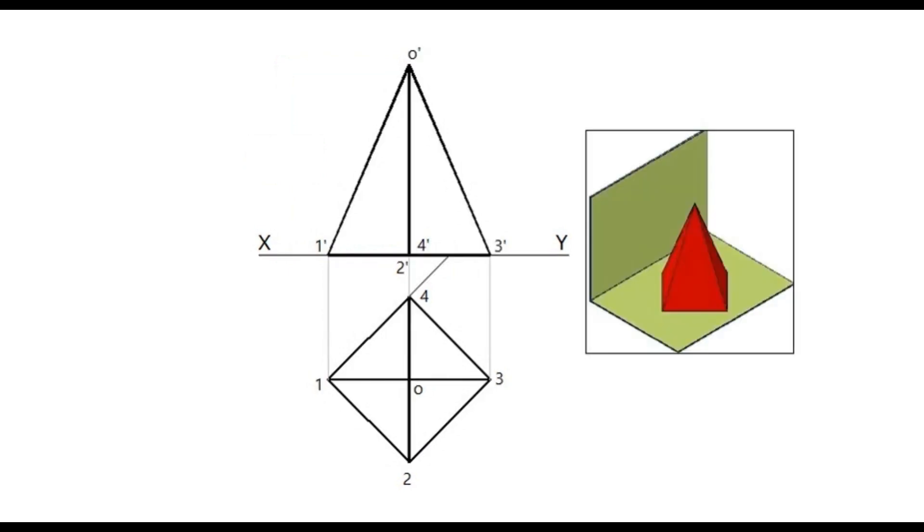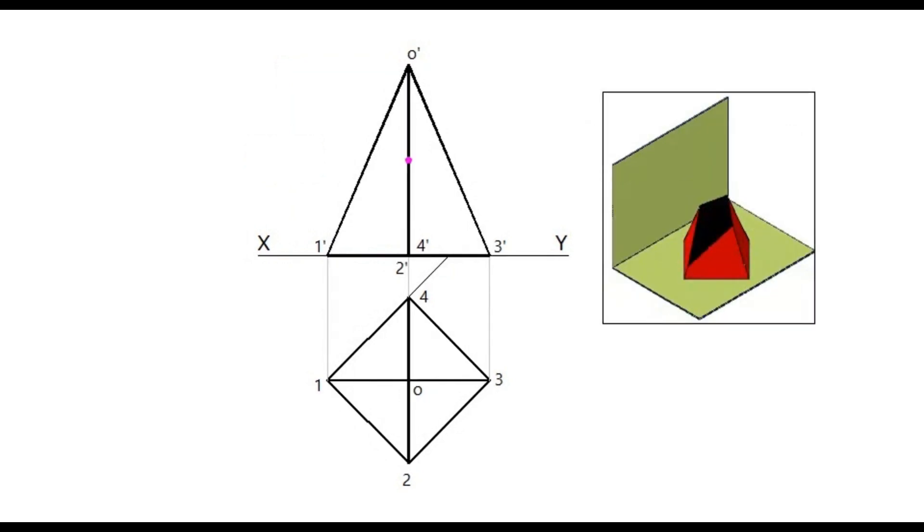The sectional plane is perpendicular to VP and inclined to HP. Since the sectional plane is perpendicular to VP, we can see the cutting plane as a straight line in the elevation.